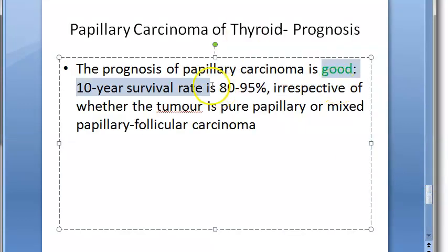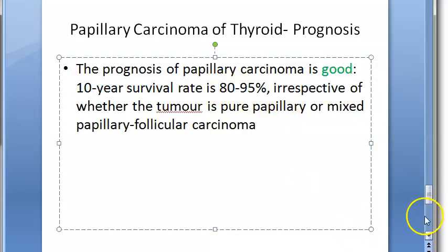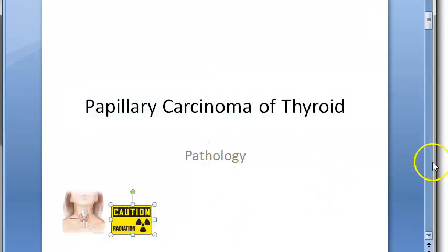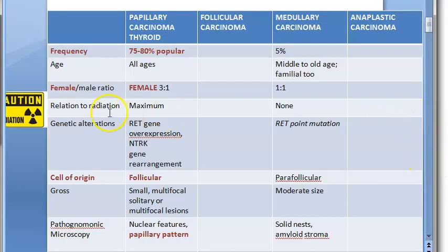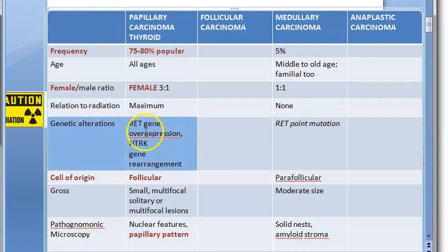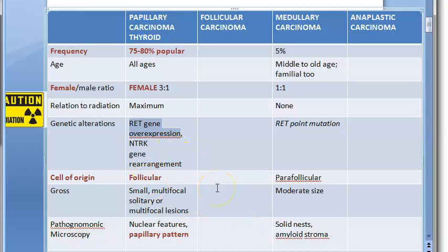The prognosis is good — the 10-year survival rate is 95%. Regarding etiology, exposure to radiation is a risk factor and is related to high risk of papillary carcinoma of thyroid. Genetic alterations include RET gene overexpression — this is a proto-oncogene which becomes an oncogene.